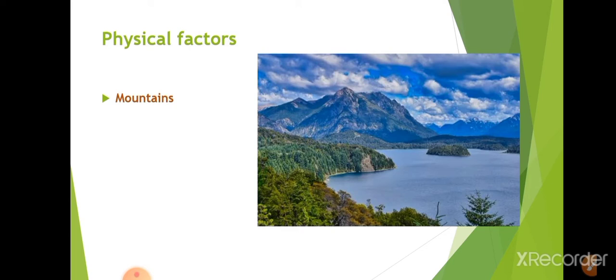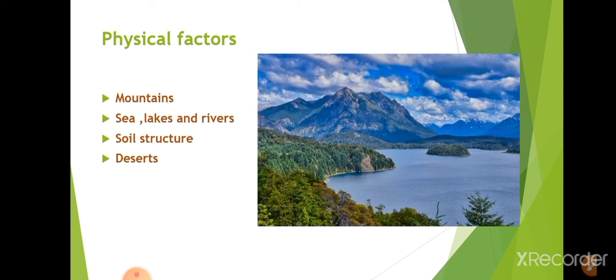Physical factors include natural barriers such as mountains, sea, lakes, rivers, soil structure, and deserts. Large mountains prevent some insects from crossing, restricting their population. Many insects cannot fly across large seas, lakes, or rivers, keeping them confined to one area. Soil structure determines whether insects lay eggs based on moisture availability. Deserts also restrict pest migration due to lack of vegetation and water.